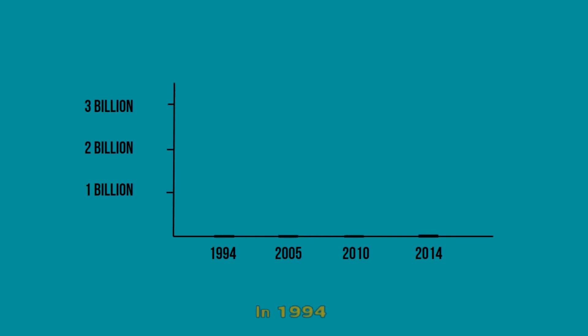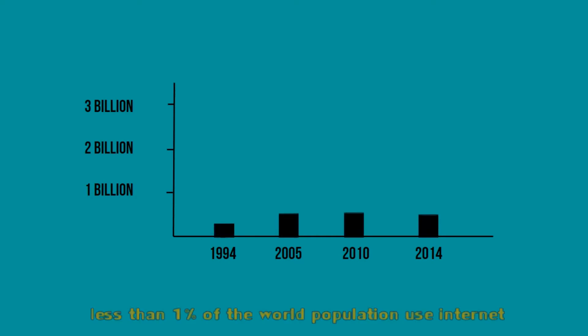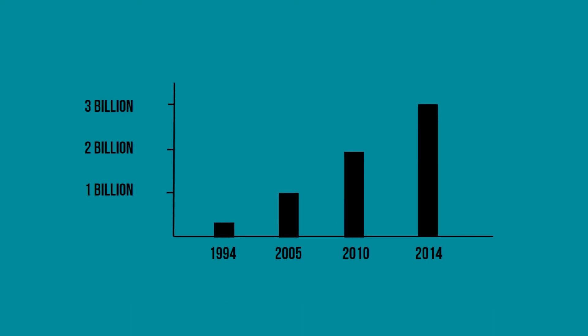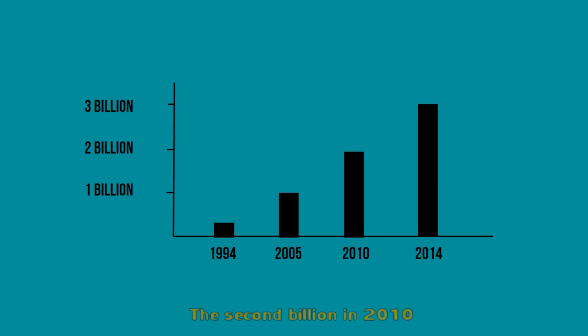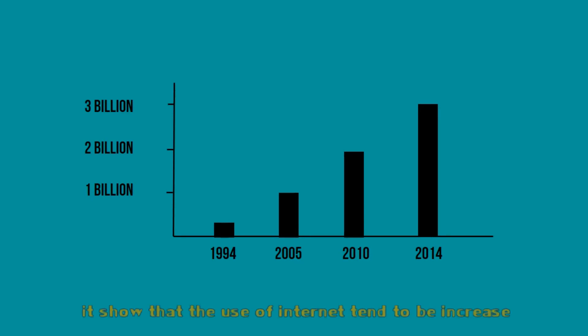In 1994, less than 1% of the world's population used the internet. The first billion was reached in 2005, the second billion in 2010, and the third billion in 2014. From the graph, it shows that the use of the internet tends to increase all the time.